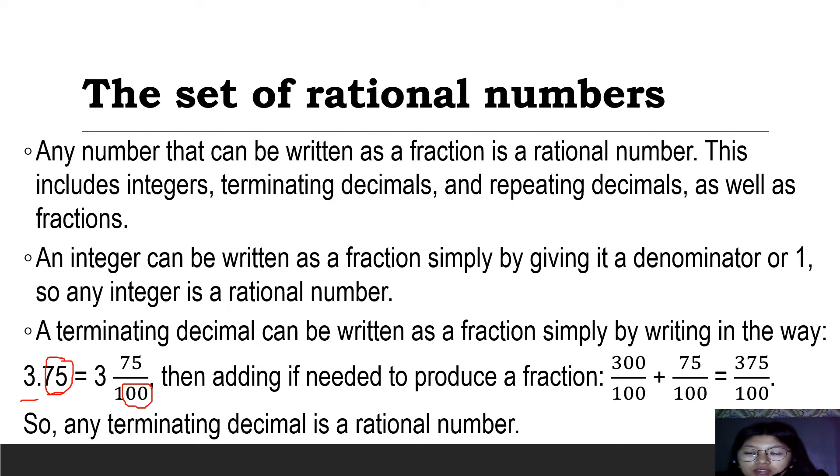To produce a fraction, we have 3, which becomes 300 over 100 when we match the denominator. That's 3 times 100 equals 300, then copy the denominator 100. Plus 75 over 100. When we add them, 300 plus 75 equals 375, with denominator 100. That's why 3.75 is equivalent to 375 over 100. Any terminating decimal is a rational number.